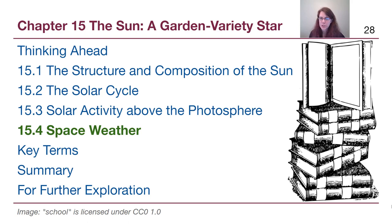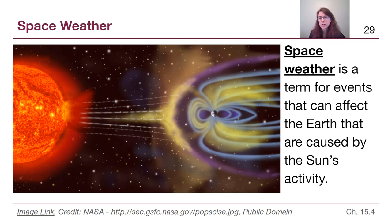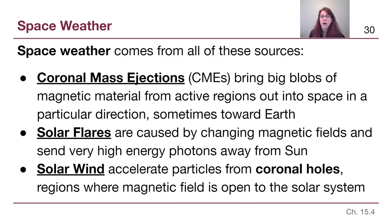Welcome back to the last video from Chapter 15, although this is not the last video about our star, the Sun. We're going to be talking about space weather very briefly, which is the way that the Sun actively affects the Earth. Space weather is a general term for events that can directly affect the Earth caused by the Sun's activity. We discussed some of the terms in the previous video, including coronal mass ejections, solar flares, and the solar wind, and we're going to make sure we understand how those actively affect the Earth.